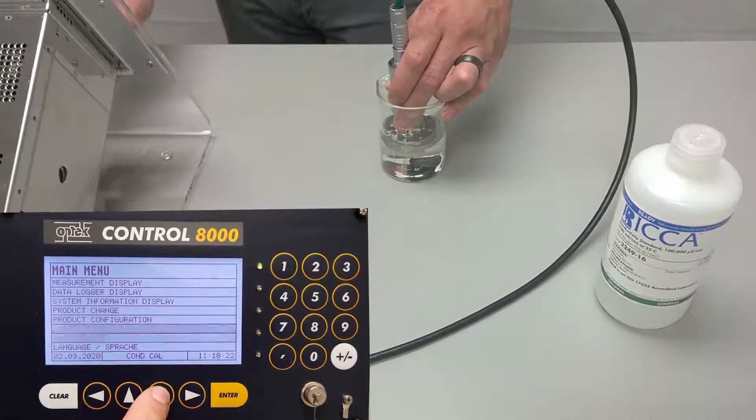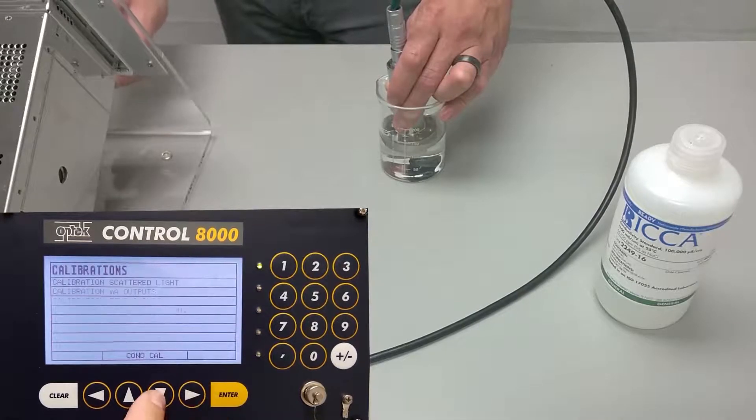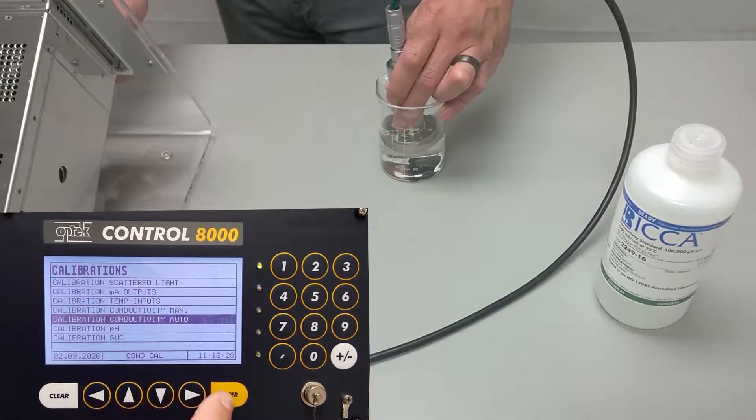Scroll down to maintenance and press enter. Scroll down to calibrations, then to calibration conductivity auto.